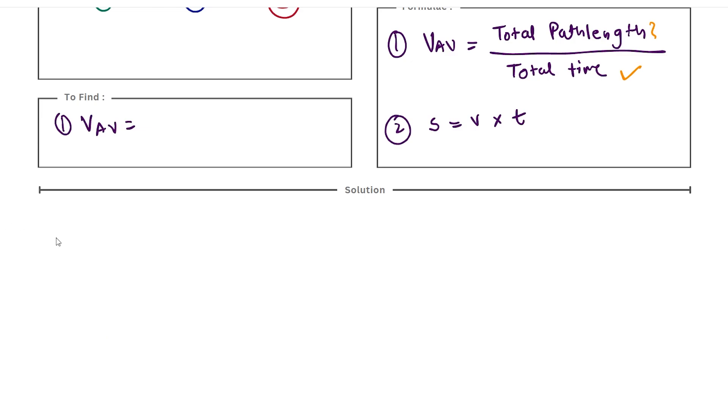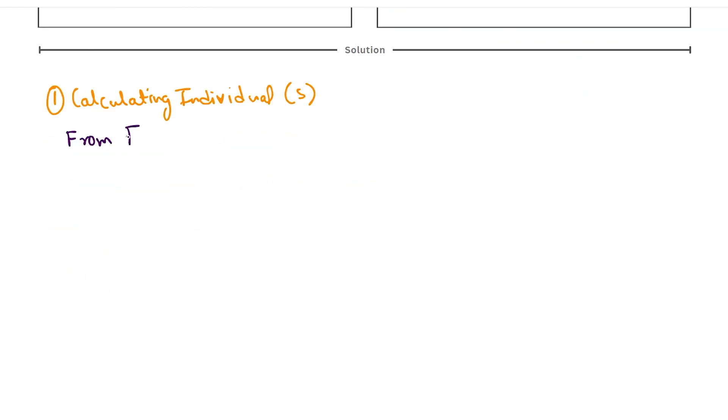Our numerical has been divided into two parts. We have first part where we calculate individual distances. So for this we use formula 2. From formula 2 I can say s1 is equal to v1 into t1, that is 50 into 0.5 which gives us, therefore s1 is equal to 25 kilometers.